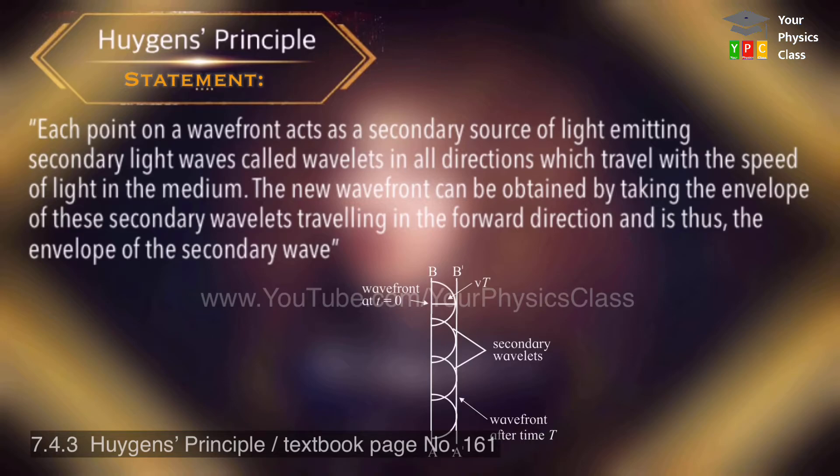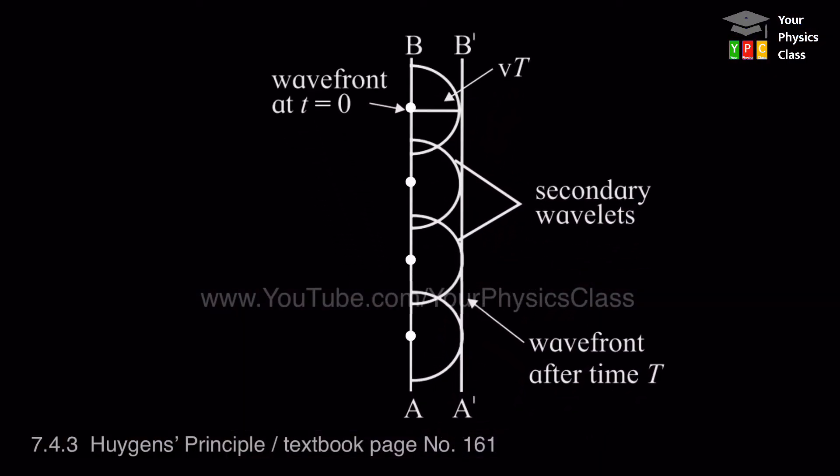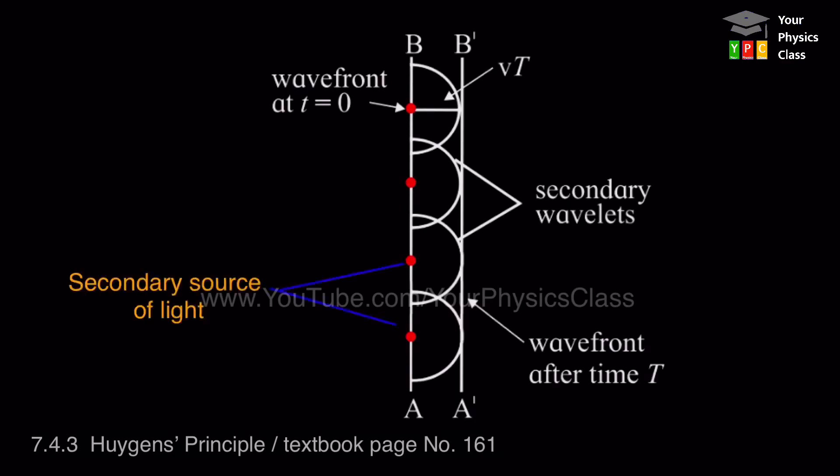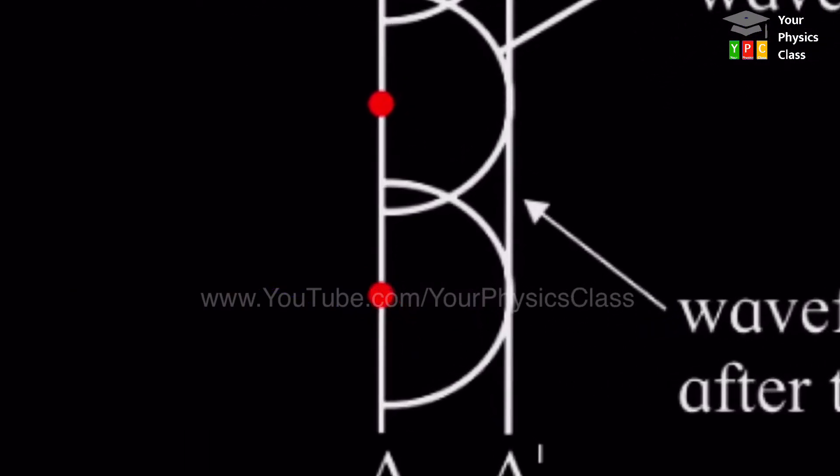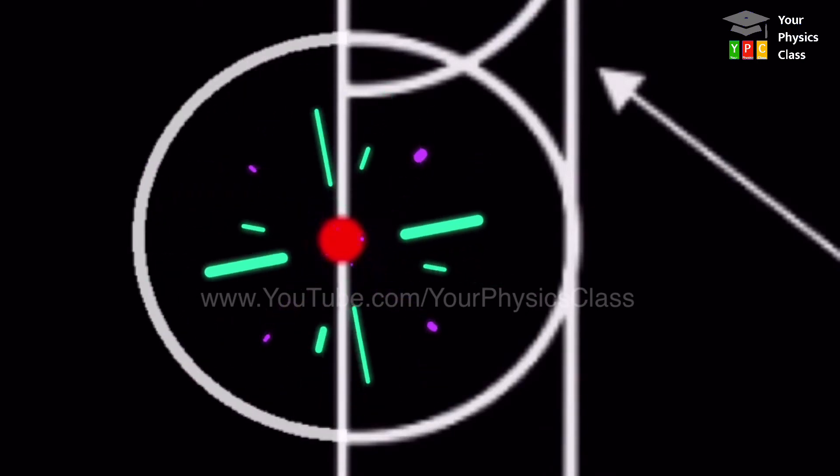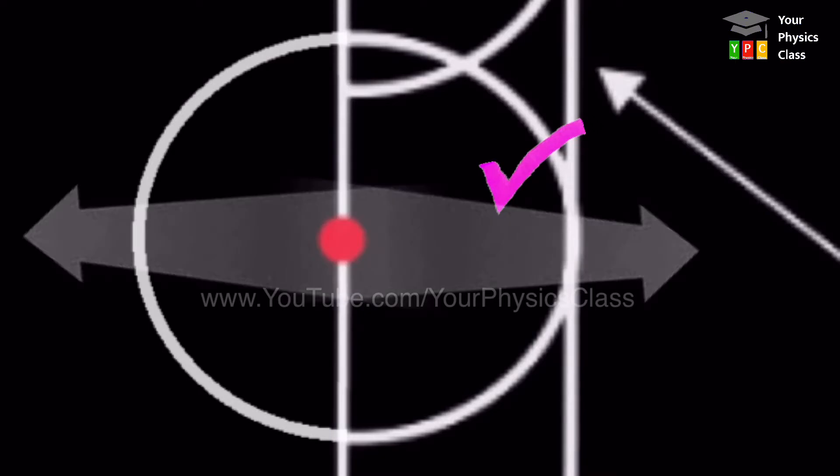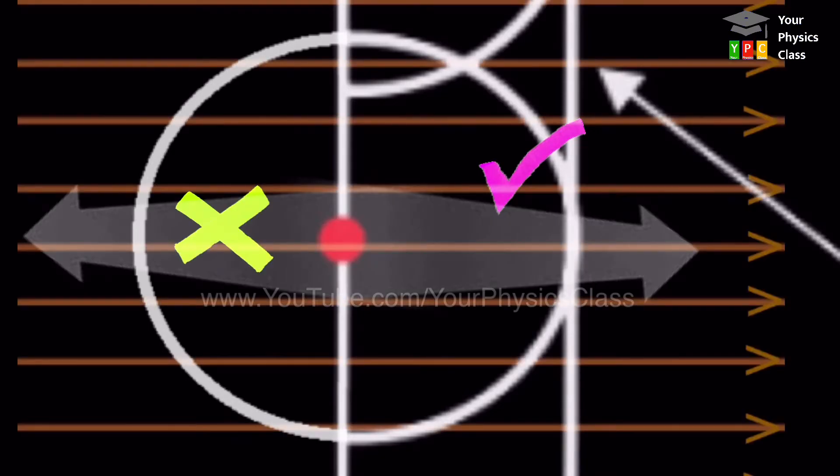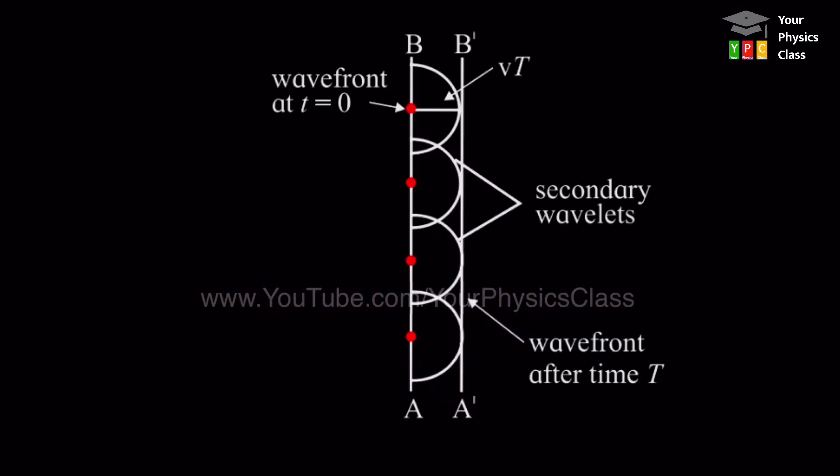This means that each point present on the wavefront will itself become a secondary source of light. And therefore the light is ineffective in backward direction.